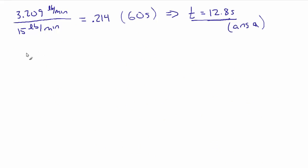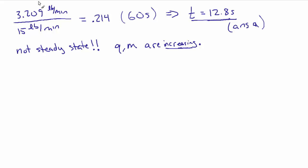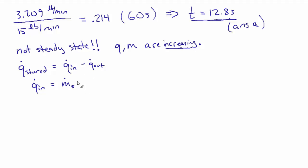It's not steady state anymore — both the heat Q and mass M in the tank are increasing. So instead of a steady-state energy balance, we write: the rate of energy stored equals Q-dot in minus Q-dot out. Q-dot in is the mass flow rate of steam times H_G at 210°F, plus the mass flow rate of cold water times H_F at 60°F. Everything here is known, so we can calculate Q-dot in directly: 15 times 1149.5 plus 26.79 times 28.08 equals 17,995 BTU per minute.